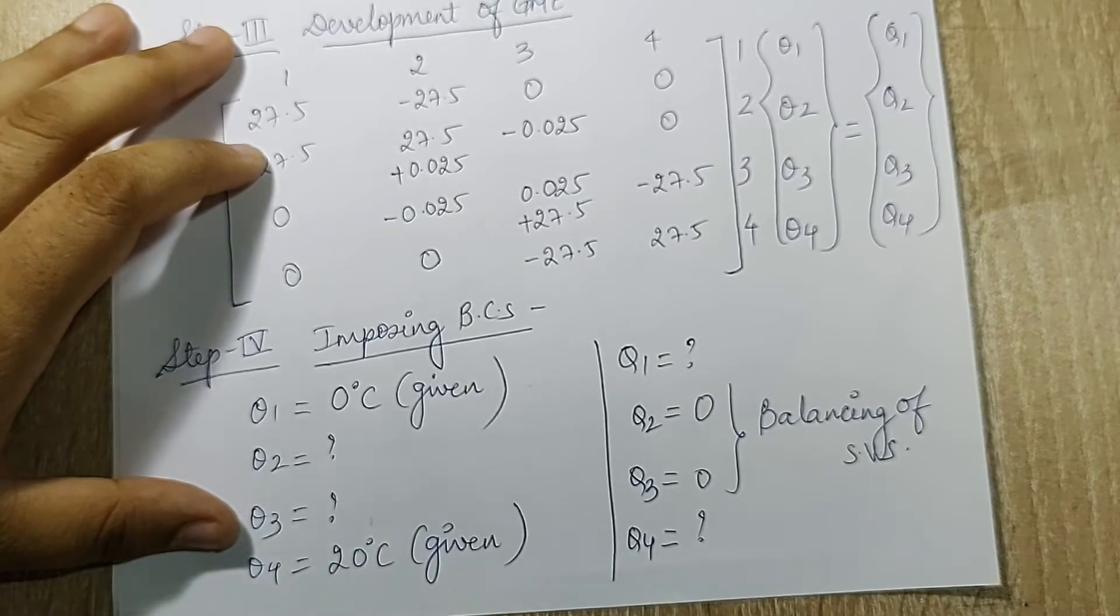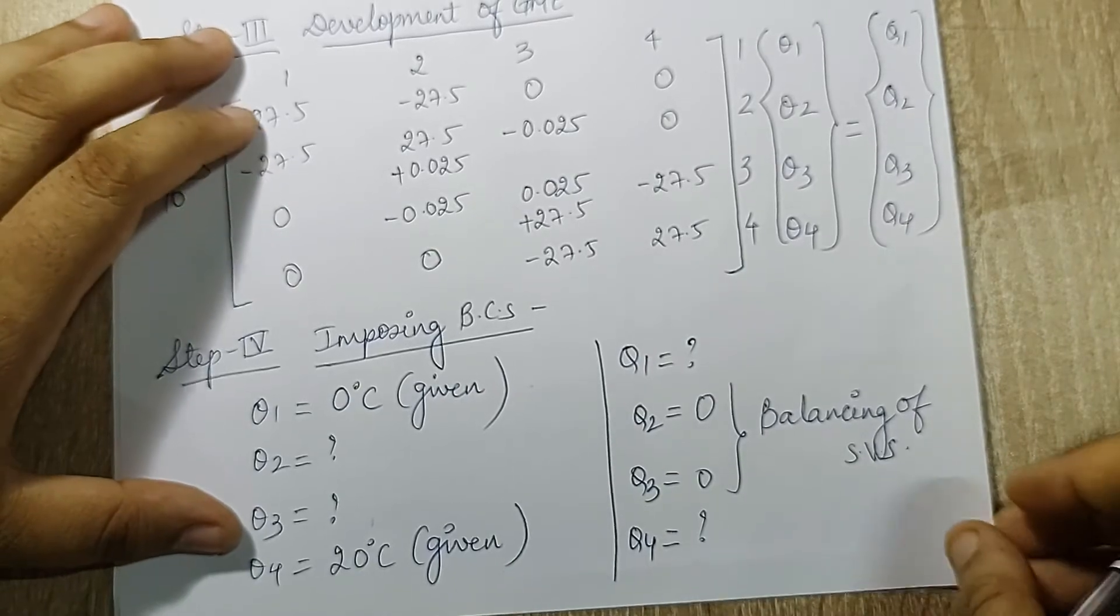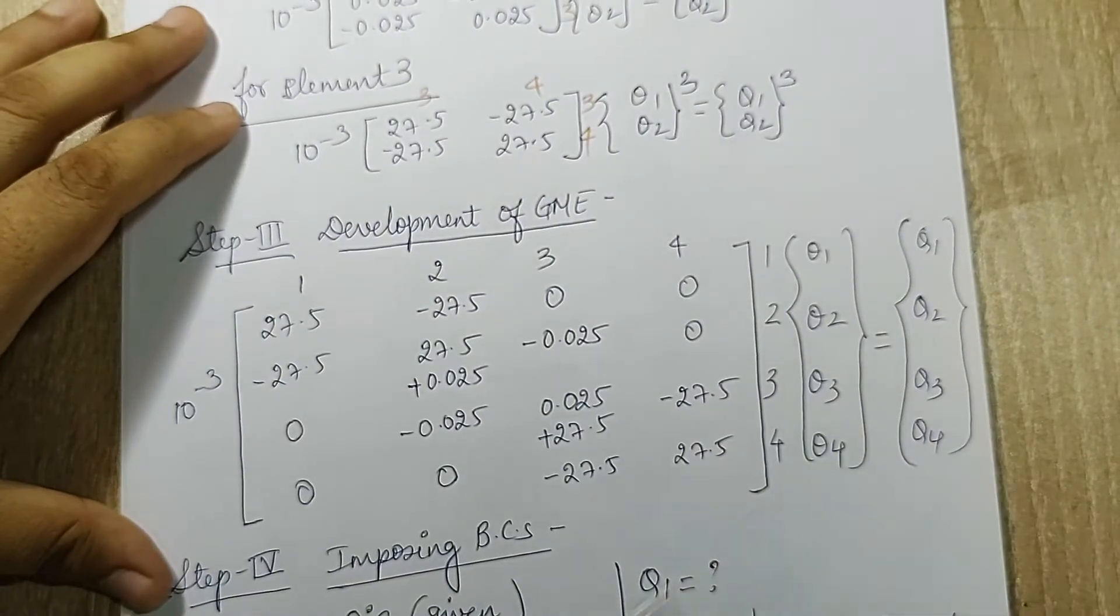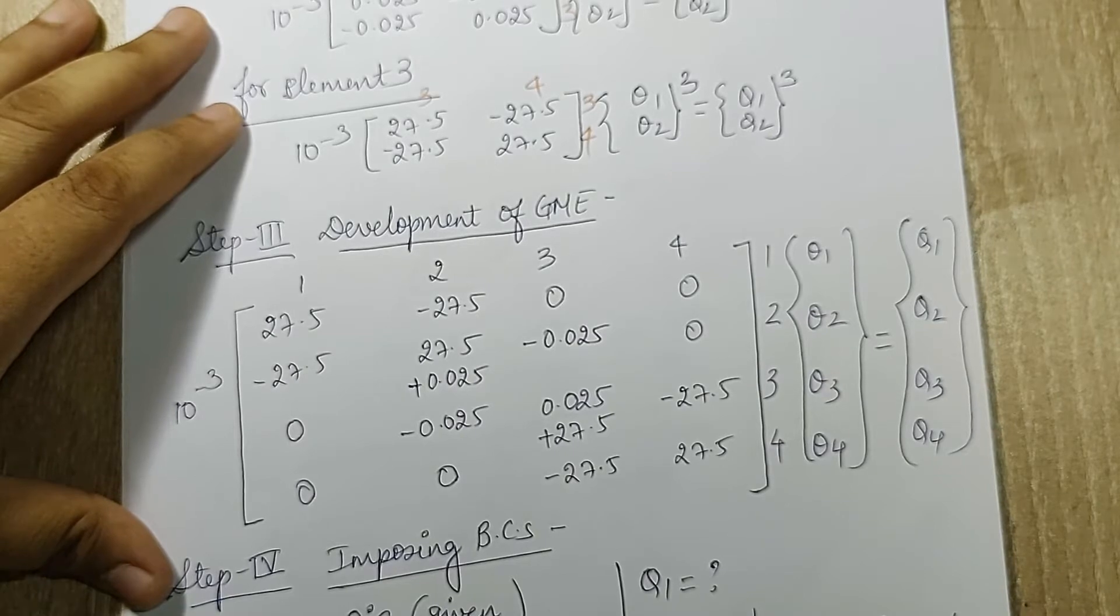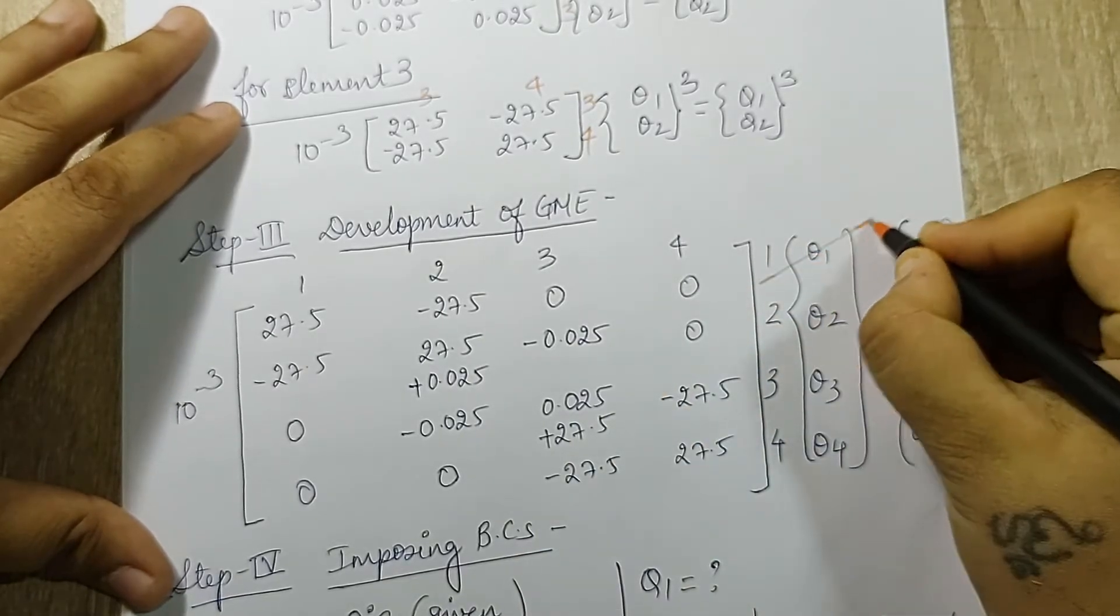So theta_2, theta_3, and q_2, q_3 is 0 because the heat flow rate through all the walls is 0, so there is no change. So I've just assumed them as 0. Now here if you look carefully, theta_1 is 0, that is the first primary variable.